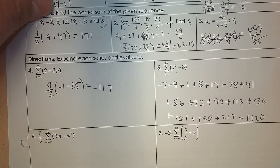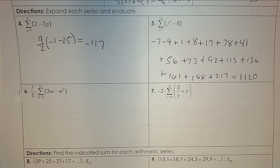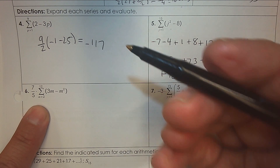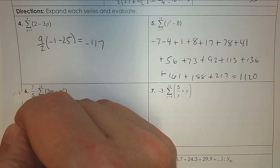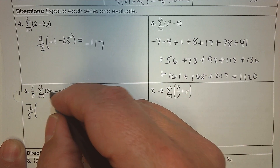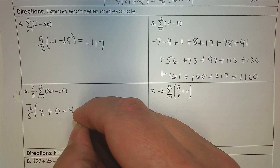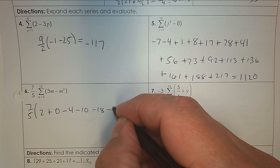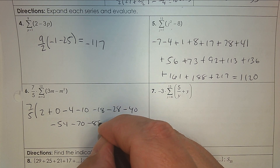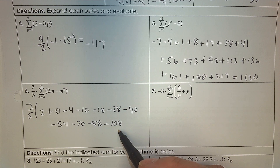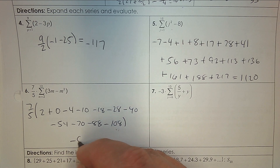Number six — not arithmetic. It says seven fifths times that. The bottom tells you where you're starting, so we're starting at two. Start with seven fifths — plug in two, you get six take away four. Keep that pattern going: plug in three and you get zero, then negative four, negative ten, negative 18, negative 28, negative 40, negative 54, negative 70, negative 88, and finally negative 108. You started with two and plug in through 12. Put that in your calculator and you get negative 585.2.